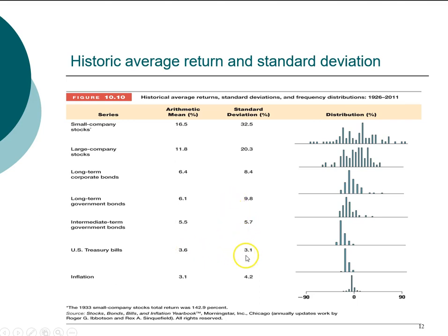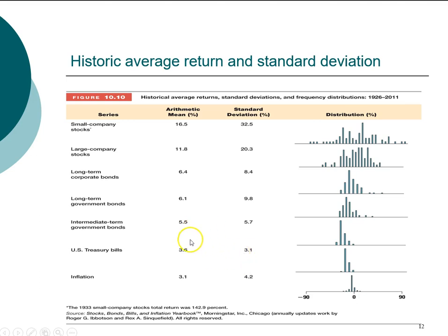T-bills, in theory, if they are truly risk-free, the standard deviation should be zero. But it's actually very, very low. You can see that compared to inflation, U.S. T-bills actually have a lower standard deviation. So we use this as a proxy for risk-free, even though it's not totally risk-free — it is the lowest risk investment we can find.